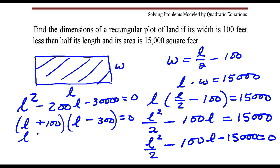Next, we're going to set each factor equal to zero and solve each equation. So in this case, L is negative 100 and for this one, L is positive 300.